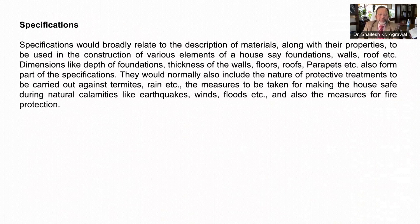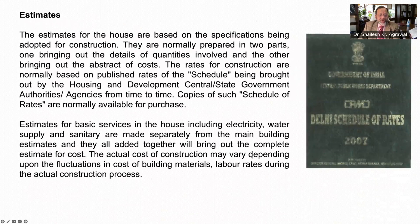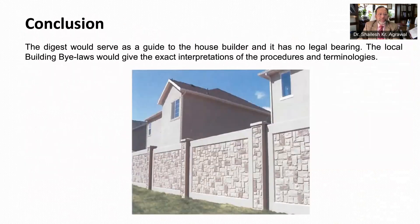Protective treatments required for rain, termites, measures to be taken for making the house safe against earthquakes, wind, floods, and measures for fire protection also form part of specifications. Based on detailed specifications, the estimates are to be worked out. Normally, estimates are prepared in two parts: one bringing out details of quantities involved, and the other bringing out the abstract of cost. The rates of construction are based on the published schedule of rates brought out by housing and development authorities or agencies from time to time. It is also pertinent to mention that estimates for electricity, water supply, and sanitary works — known as services — are made separately from the main building estimate and are added together to bring out the complete cost.